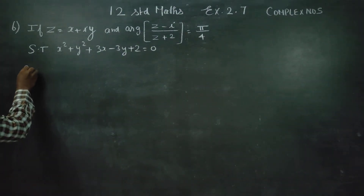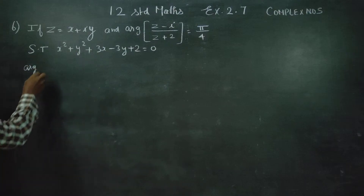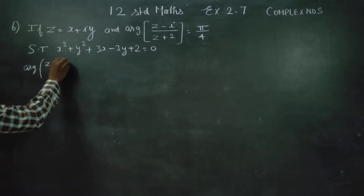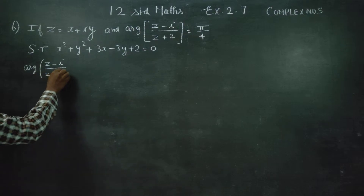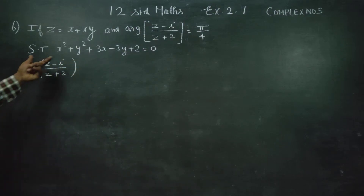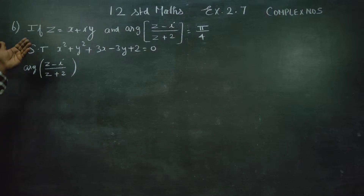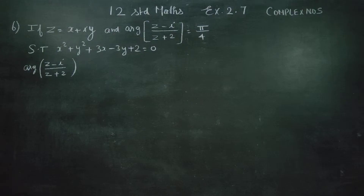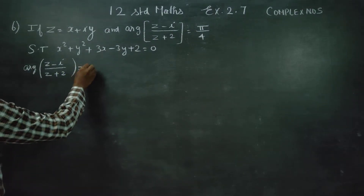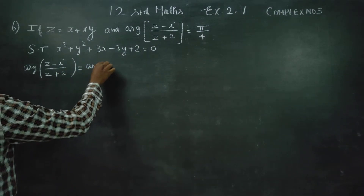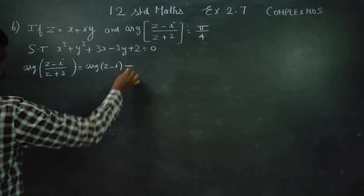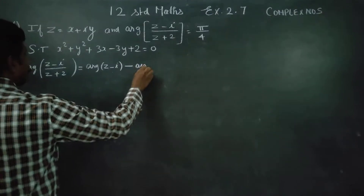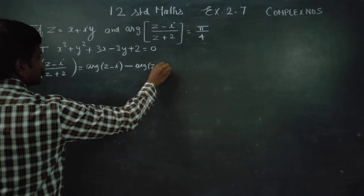I am going to first start with argument of (z minus i) by (z plus 2). This is a complex number divided by a complex number. The argument of a division is subtraction: argument of z1 by z2 is argument of z1 minus argument of z2.